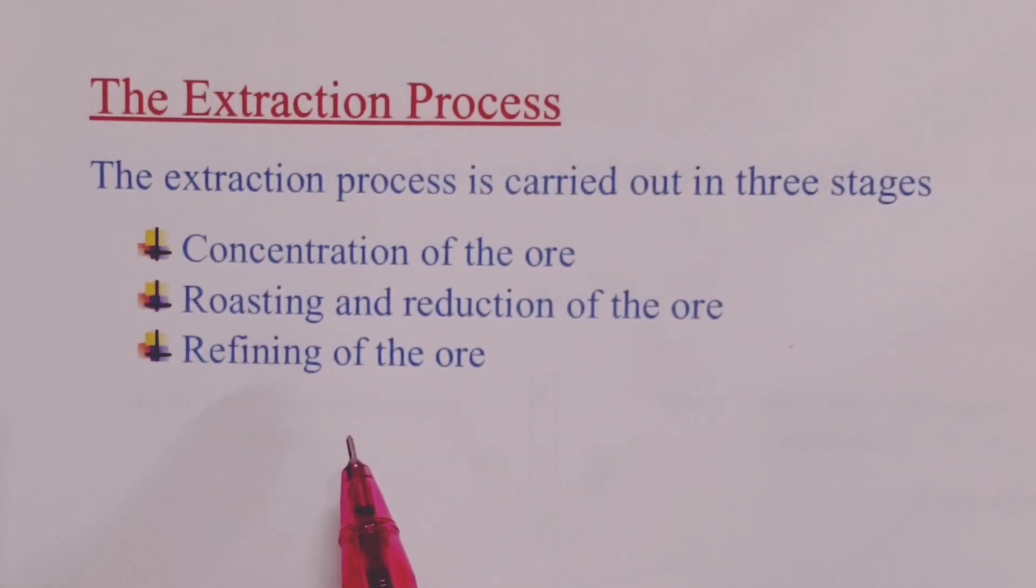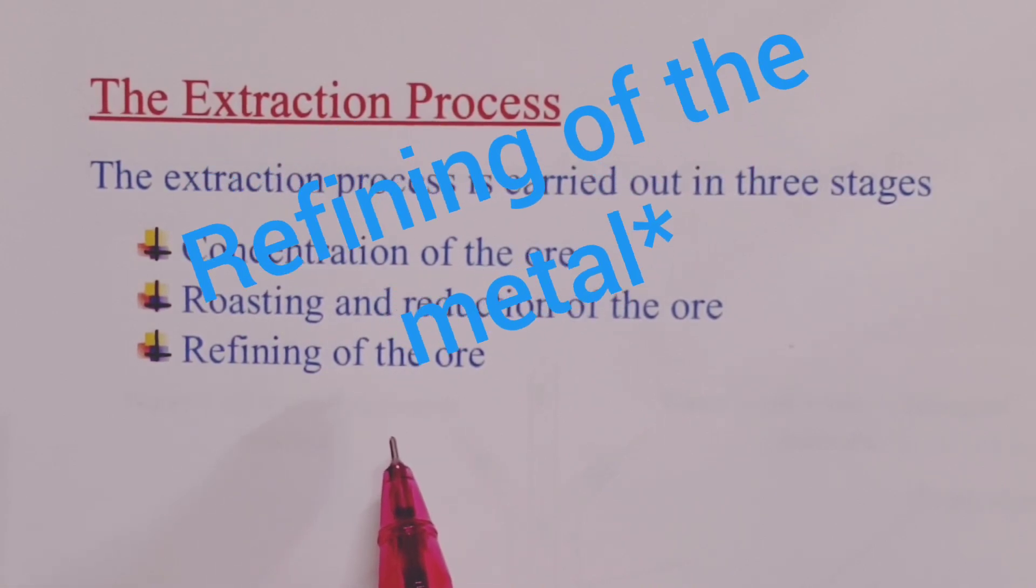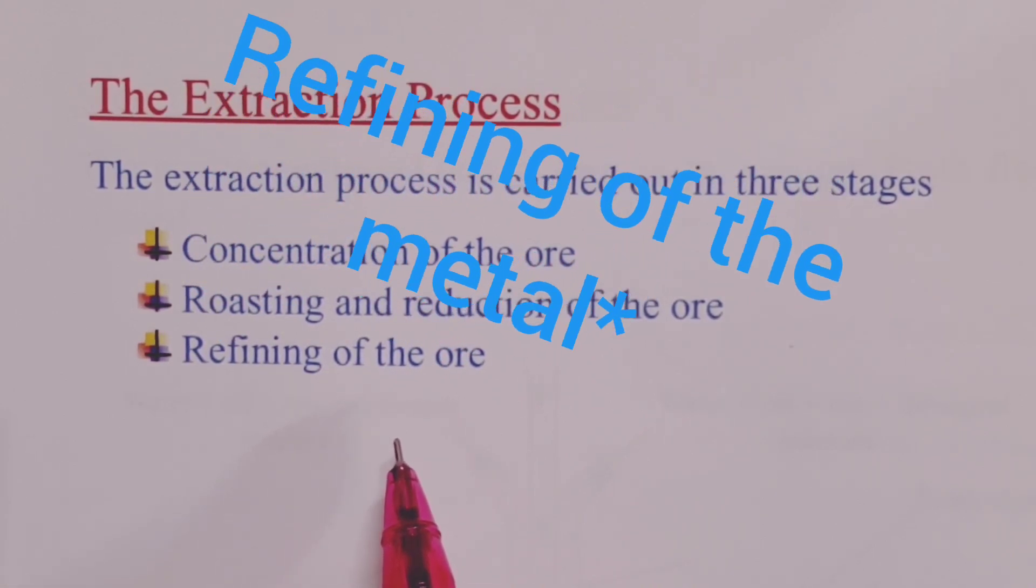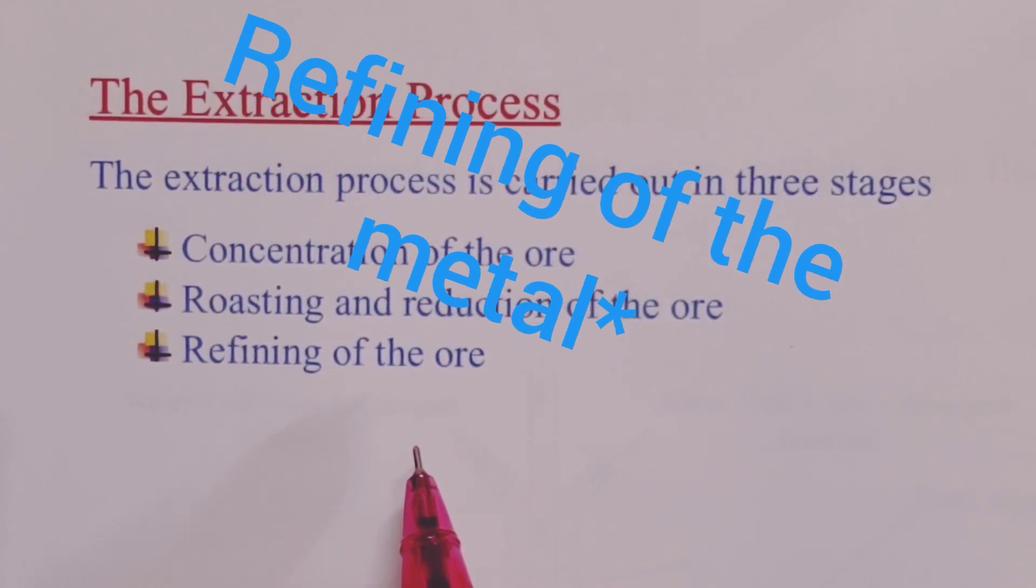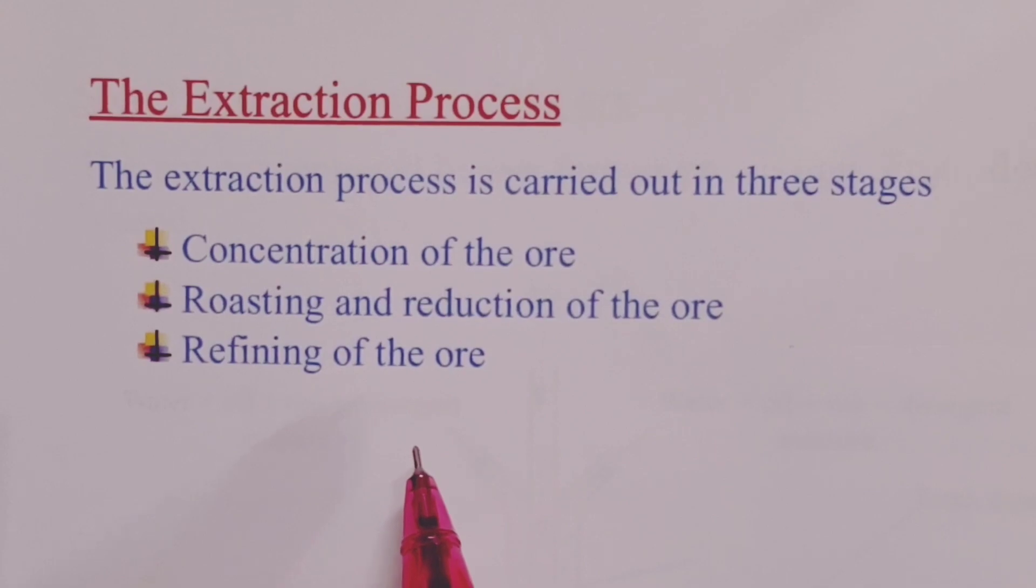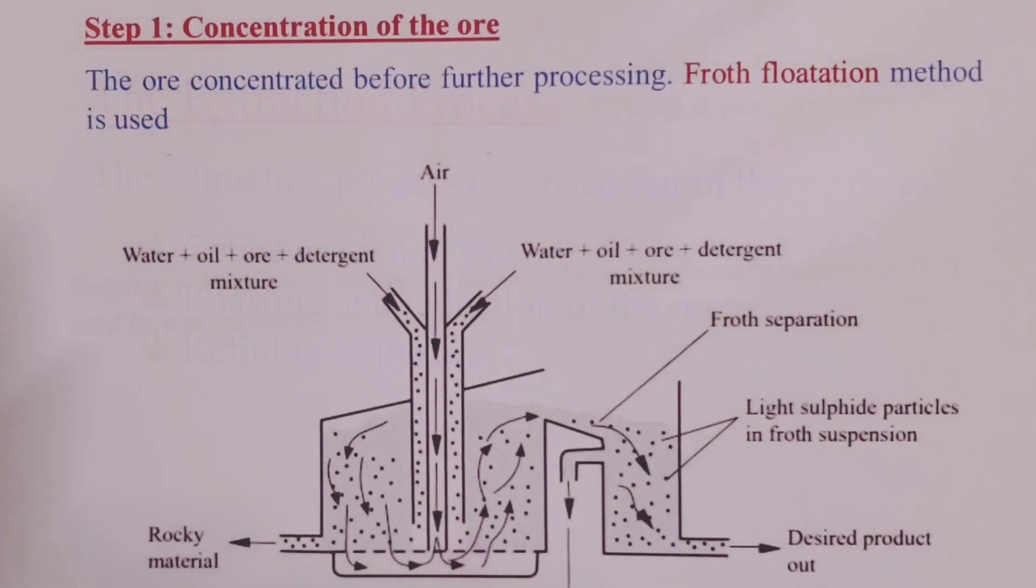And we finally have refining of the ore or purification of the same. Let us now go through each step one by one as we explain what goes on at each. Beginning with concentration of the ore. Step one involves concentration of the ore.